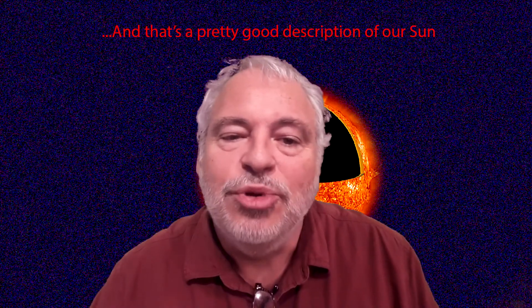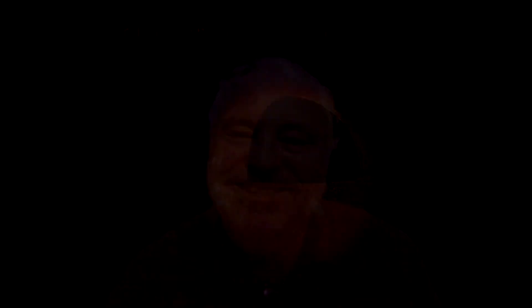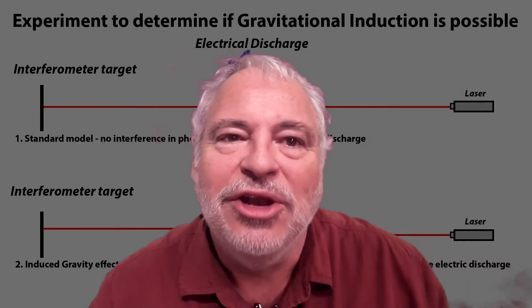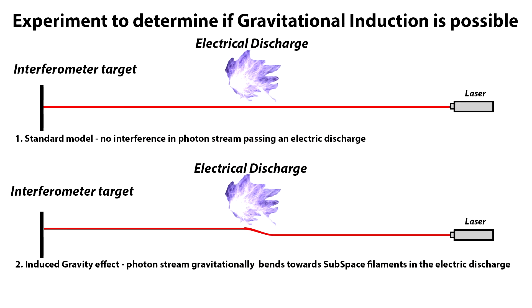That's a pretty good description of our sun. Maintaining that gravity-inducing subspace exists could easily be dismissed as wild speculation, the feverish imaginings of an overactive mind. For this reason, I have devised a rudimentary sketch of a laboratory experiment that contests presently accepted electromagnetic gravitational dogma.